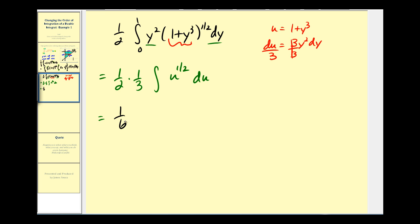Looks like we'd have one-sixth. This would be u to the three-halves divided by three-halves, or times two-thirds. And of course, u is (1 + y³). So it looks like this simplifies nicely. Basically, we have one-ninth, and then when y is one, we have 2 to the three-halves minus, and then when y is zero, 1 to the three-halves.